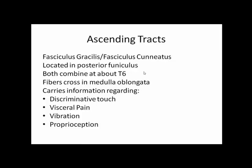They both combine at about T6, so they become one tract. The fibers cross in the medulla oblongata of the brain stem. These tracks carry sensory information, so they're ascending tracks. They carry sensory information related to discriminative touch, visceral pain, vibration, and proprioception.